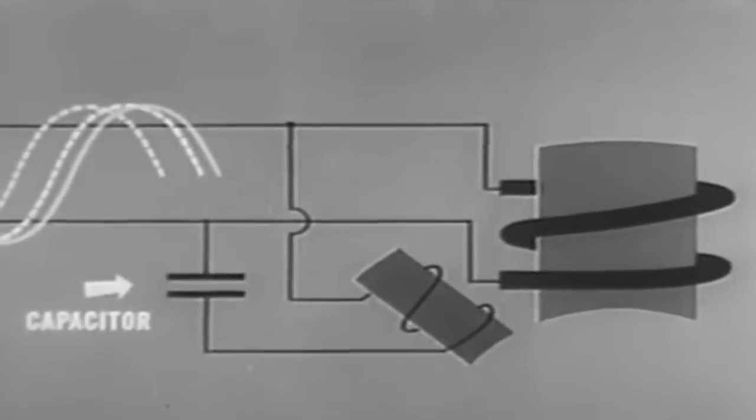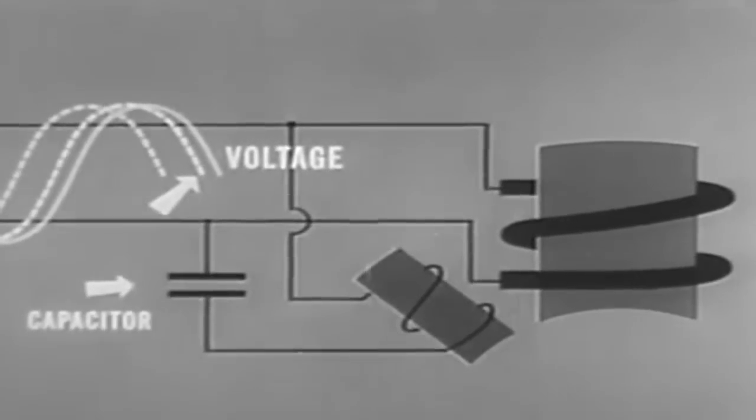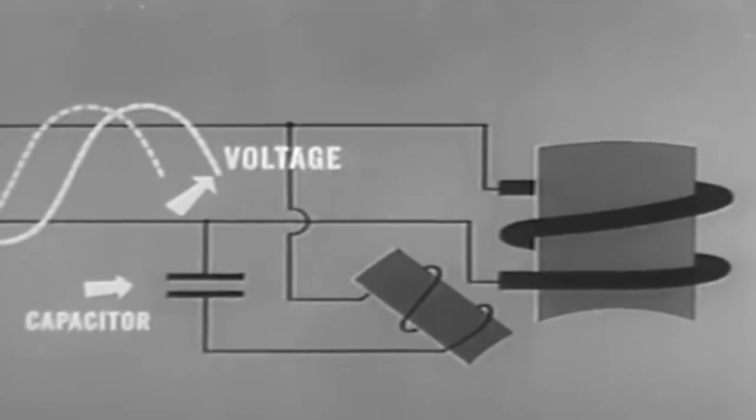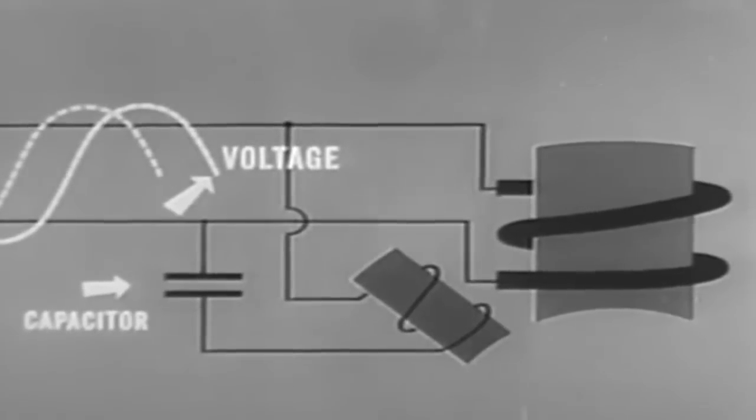In the third method, a capacitor is placed in series with a starter winding. This causes a greater phase shift between the two windings. We now have two-phase operation on single-phase voltage.